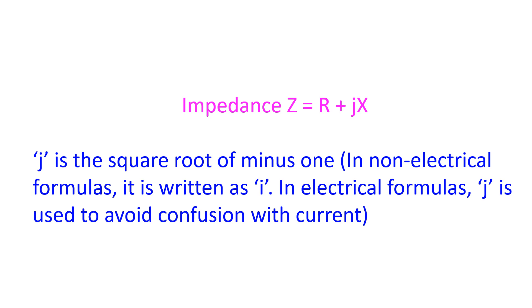Impedance Z is equal to R plus Jx where J is the square root of minus 1. In non-electrical formulas, it is written as I, the imaginary unit. In electrical formulas, J is used to avoid confusion with current.